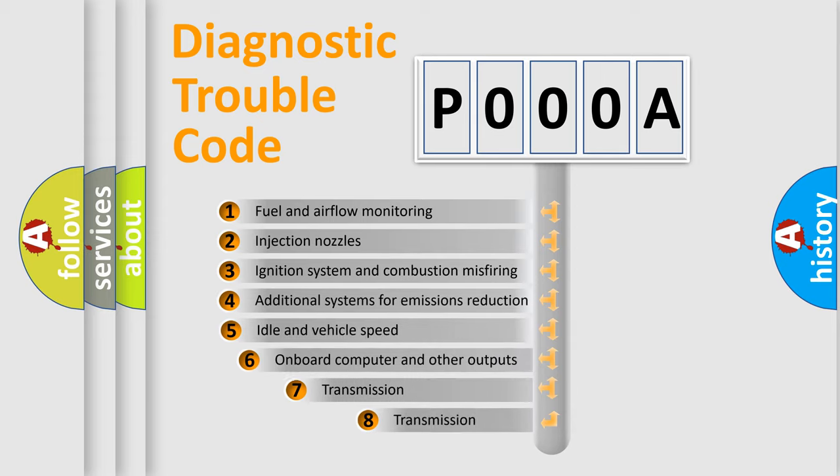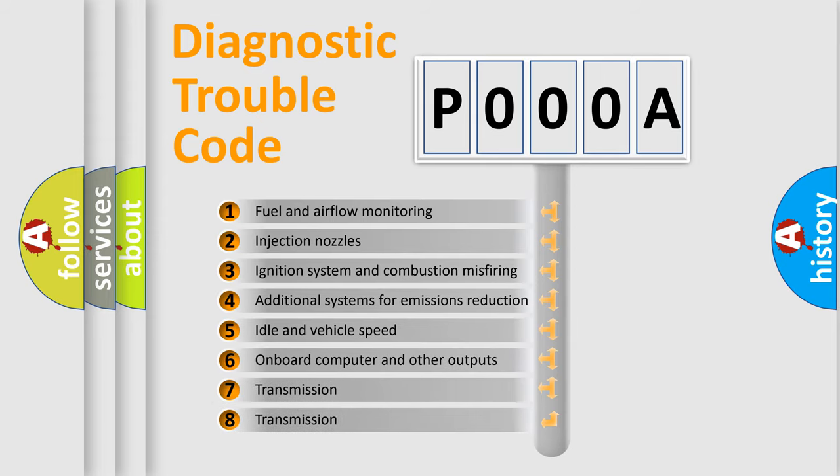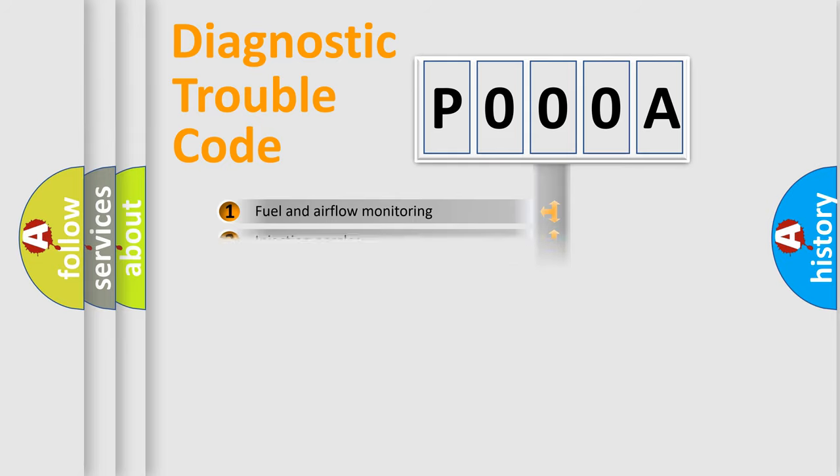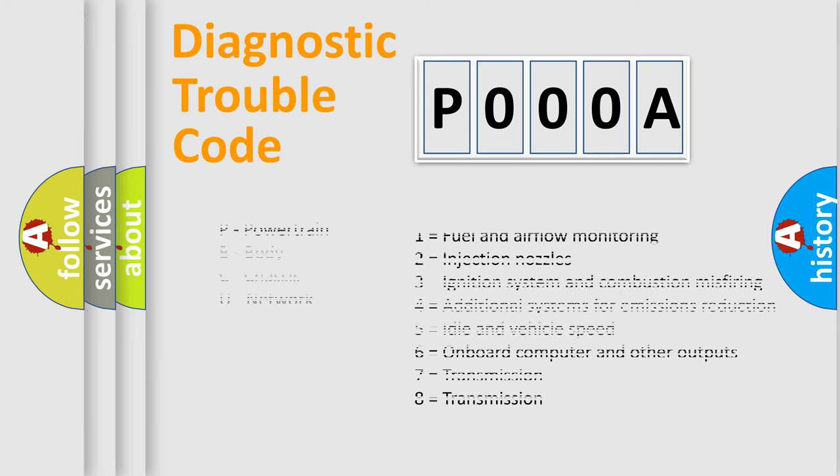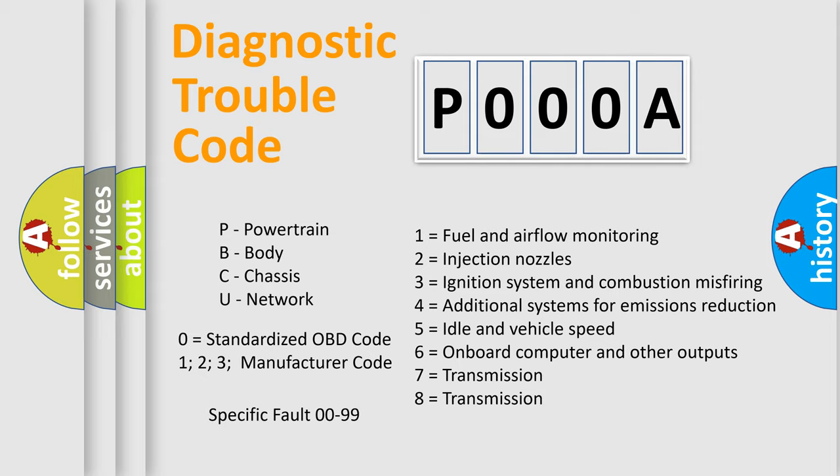The third character specifies a subset of errors. The distribution shown is valid only for the standardized DTC code. Only the last two characters define the specific fault of the group. Let's not forget that such a division is valid only if the second character code is expressed by the number zero.